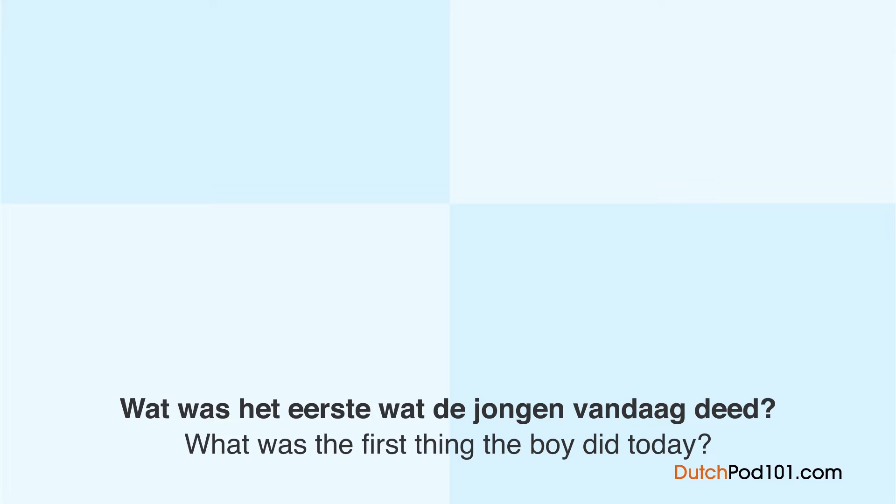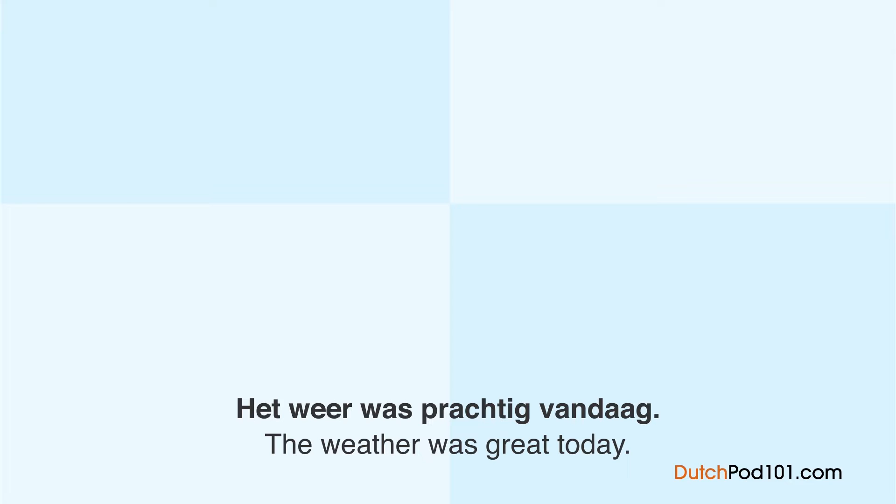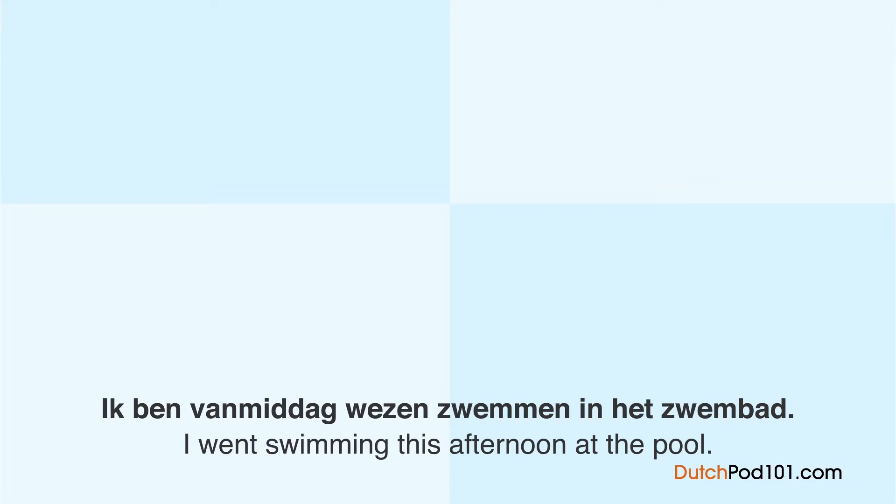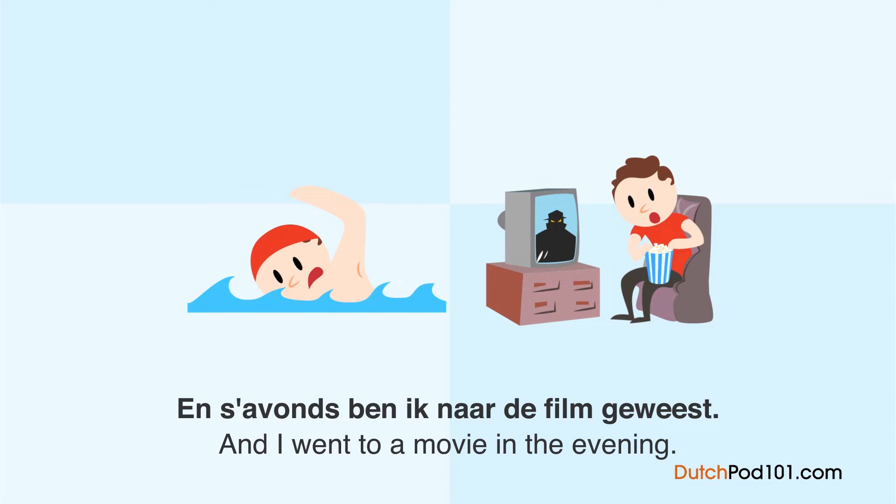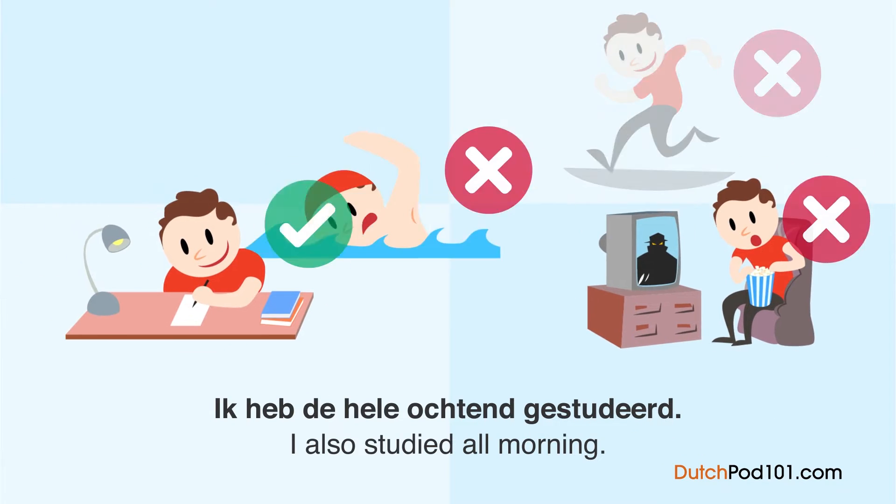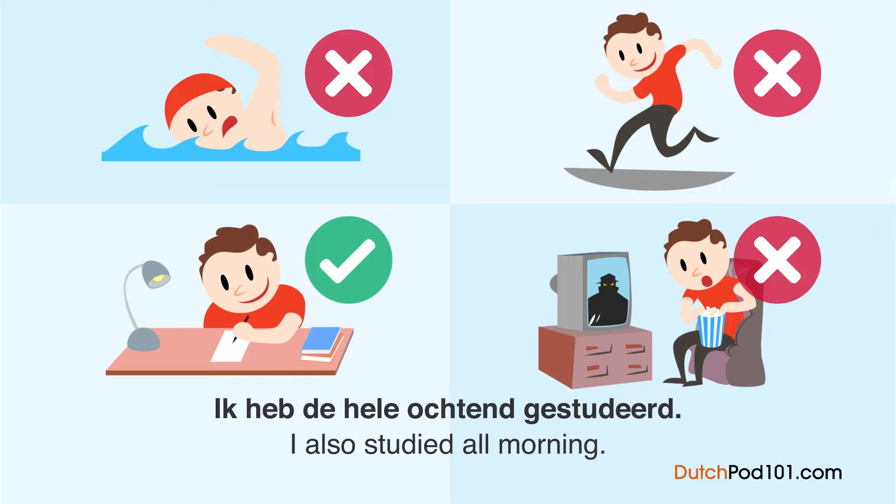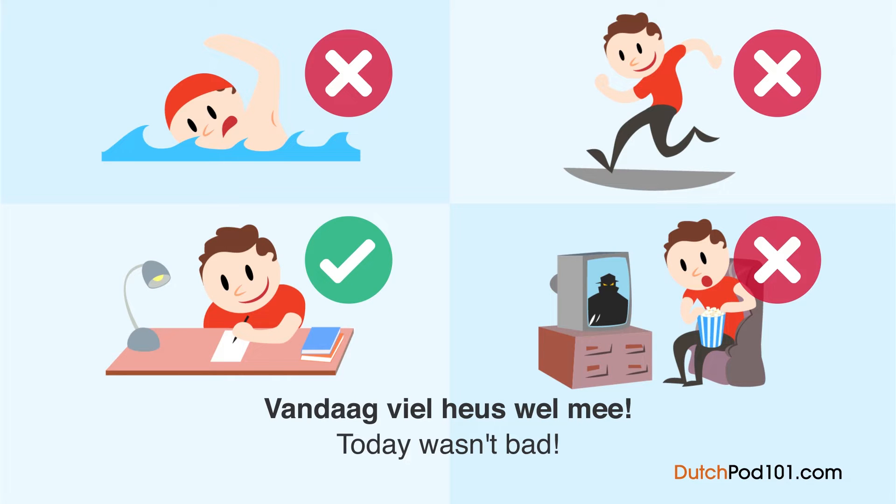What was the first thing that the young man did today? A young man reads his day book. The weather was beautiful today. I was swimming in the swimming pool. In the afternoon I was swimming in the swimming pool. I went to the movie. I studied all the time. Today it all seemed fun.